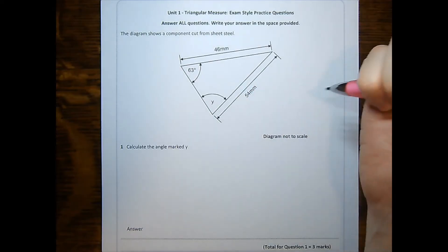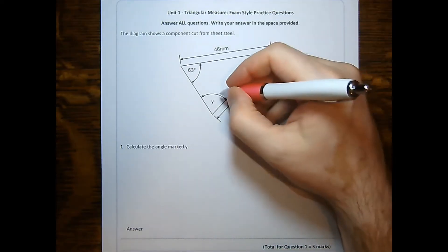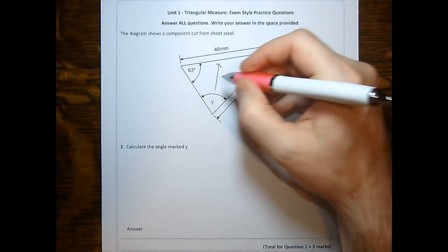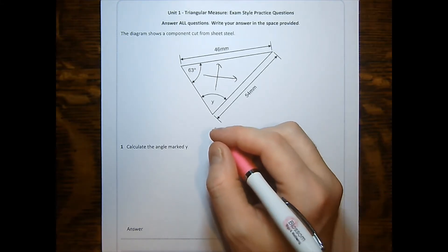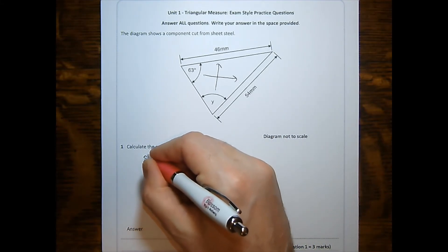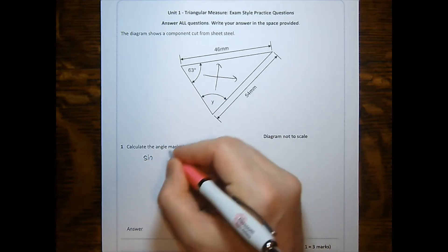In question one, we can see that we've got an angle opposite a side and another angle opposite another side. This means that we're using the sine rule. Since we're looking for the angle, we'll have sine of the angle on top and that's sine of y.